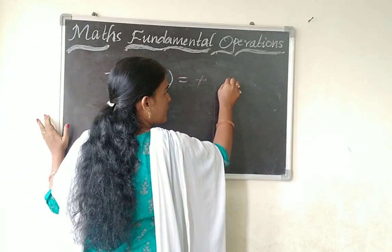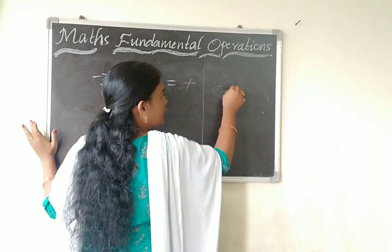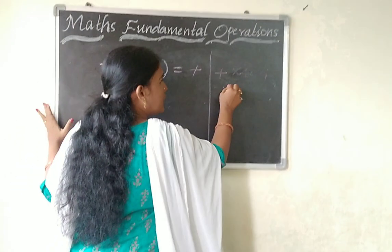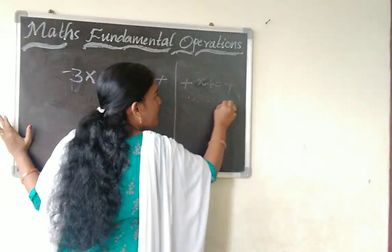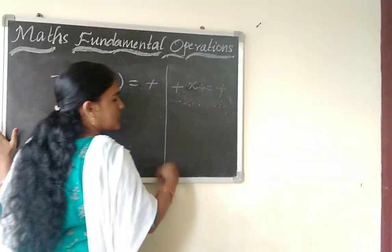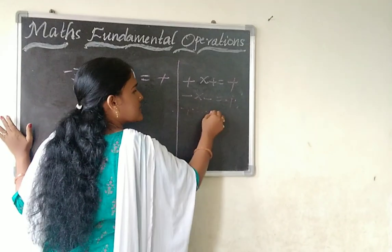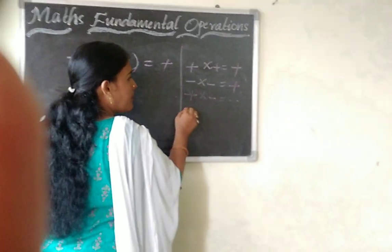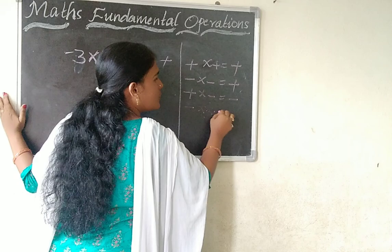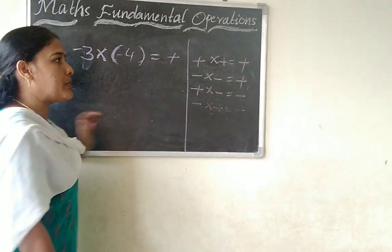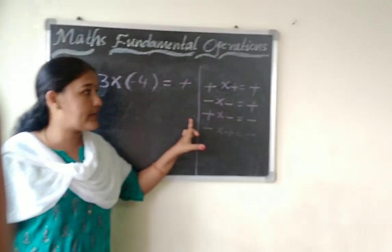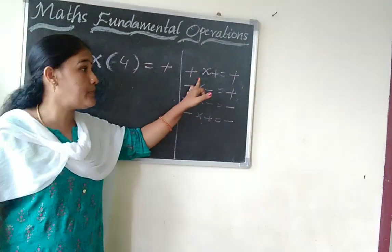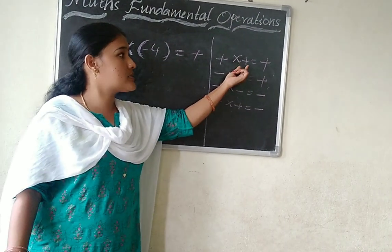First you have to choose: plus into plus is equal to plus. Minus into minus is equal to plus. Plus into minus is equal to minus. So minus into plus is equal to minus.